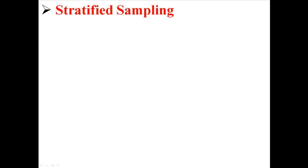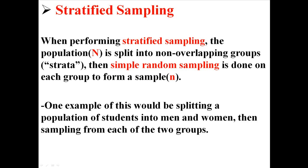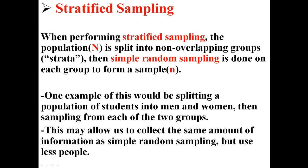So we might do something called stratified sampling. When performing stratified sampling, the population is split into two or more non-overlapping groups called strata, and then simple random sampling is done on each group to form a sample. For example, you might split a population of students into men and women, and then sample from each of those two groups. This might allow us to collect the same amount of information as simple random sampling but use less people because we've already made the distinction between men and women.